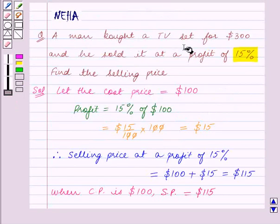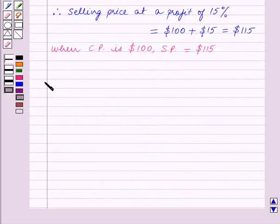Now in the question we are given the cost price which is $300 and we have to find the selling price. So therefore when cost price is $300.